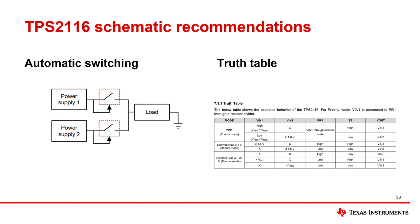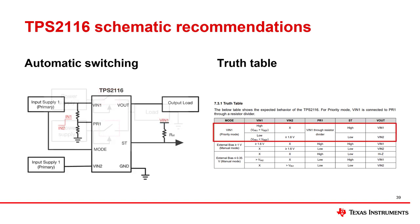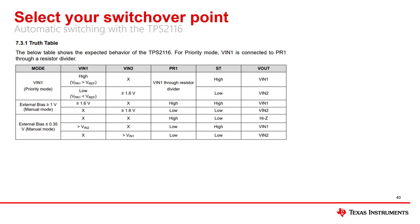If you select an automatic switching configuration, using the information in the truth table a schematic for the TPS2116 can be created as shown — with the mode pin needing to be pulled to VN1, and the PR1 pin controlled by VN1 through a resistor divider.